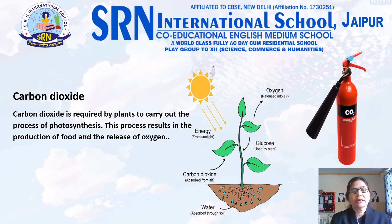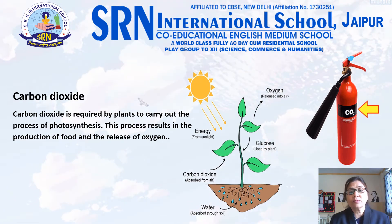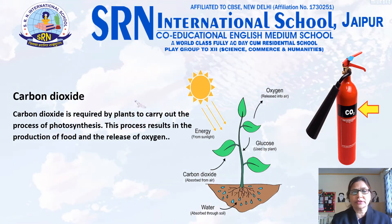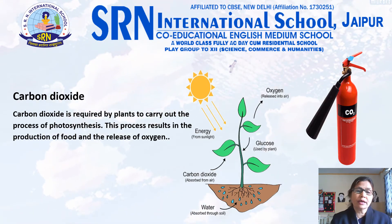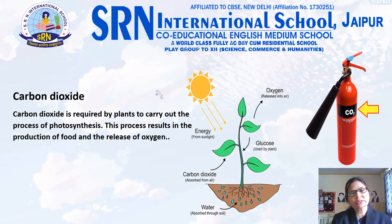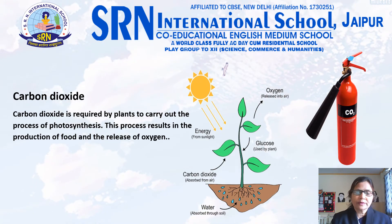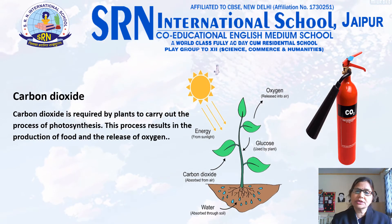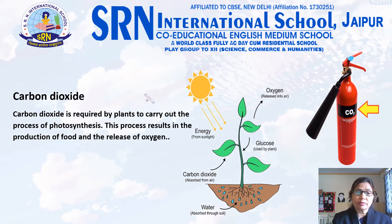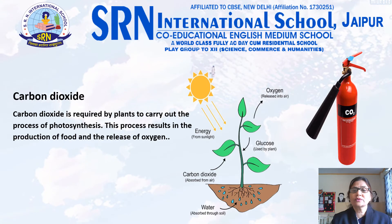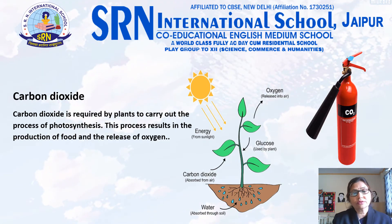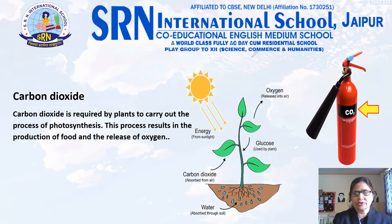Carbon dioxide. Air contains a tiny amount of carbon dioxide, but its presence is very important. Carbon dioxide is required by plants to carry out the process of photosynthesis. This process results in the production of food and the release of oxygen.